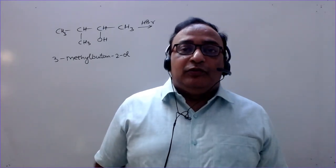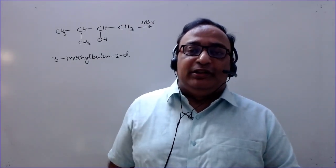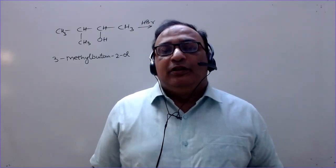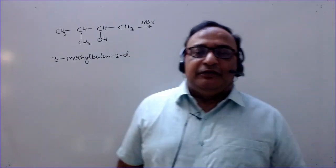Now you know that which carbocation is more stable out of primary, secondary, tertiary. Tertiary is more stable, primary is least stable. So methyl, primary, secondary, tertiary - this is the order of stability, the increasing order of stability. So tertiary is least reactive and more stable.